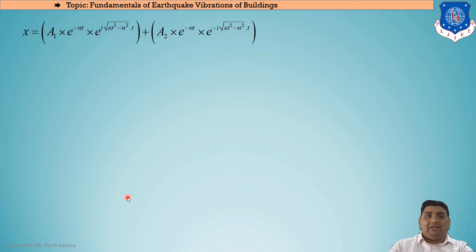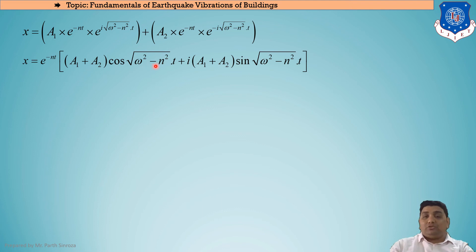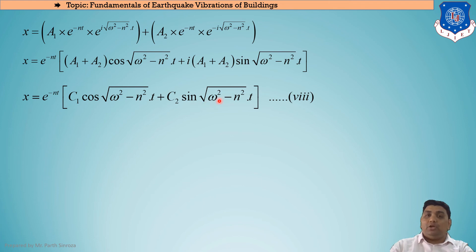Applying Euler's formula e^(iθ) = cosθ + i·sinθ, and recognizing e^(-nt) is common to both terms, we factor it out. Combining constants, the solution becomes x = e^(-nt)[C₁·cos(√(ω²-n²)·t) + C₂·sin(√(ω²-n²)·t)]. This is our displacement equation for the underdamped case, which will be solved further.